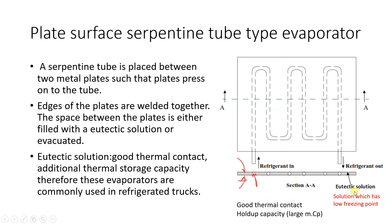The eutectic solution has a low freezing point. In the refrigerated truck application, a ground-based refrigeration system chills the evaporator and freezes the eutectic solution. When the truck travels, the ground refrigeration system is disconnected. The chilled eutectic solution maintains the cold temperature inside the truck over a large distance without requiring a refrigeration system on board.